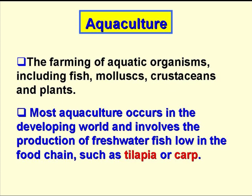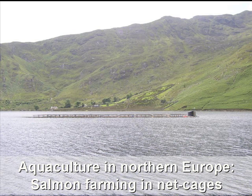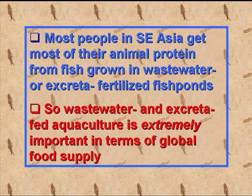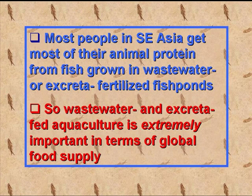However, in developing countries, especially in Asia, aquaculture is most commonly the production of freshwater fish that are quite low in the food chain, for example tilapia and carp. Aquaculture occurs in all parts of the world, and this slide shows salmon farming in cages in a seawater loch on the west coast of Scotland. But it's wastewater-fed fish culture in developing countries that we're going to consider in this presentation, as most people in South East Asia, the most densely populated part of the developing world, get most of their animal protein from fish grown in wastewater or excreta-fertilised fish ponds. So in terms of global food production, this process is hugely important.